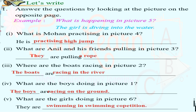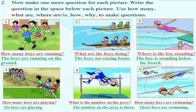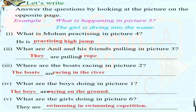Next, let's write. Answer the questions by looking at the picture on the opposite page. There are six pictures. What is Mohan practicing in picture four? He is practicing high jump. What are Anil and his friends pulling in picture three? They are pulling a rope. Where are the boats racing in picture two? The boats are racing in the river. What are the boys doing in picture one? The boys are racing on the ground. What are the girls doing in picture six? They are swimming in a swimming competition.